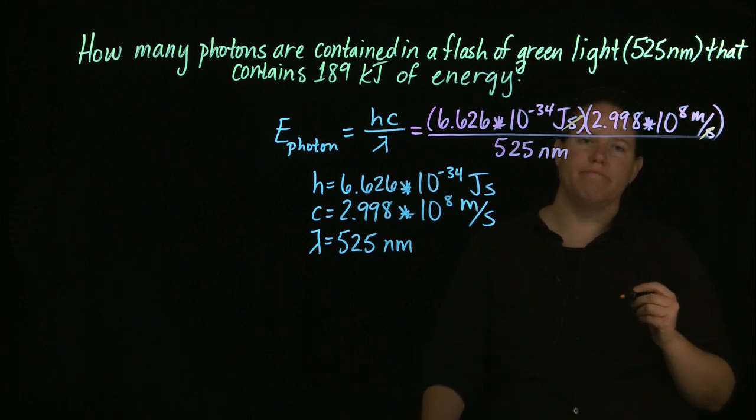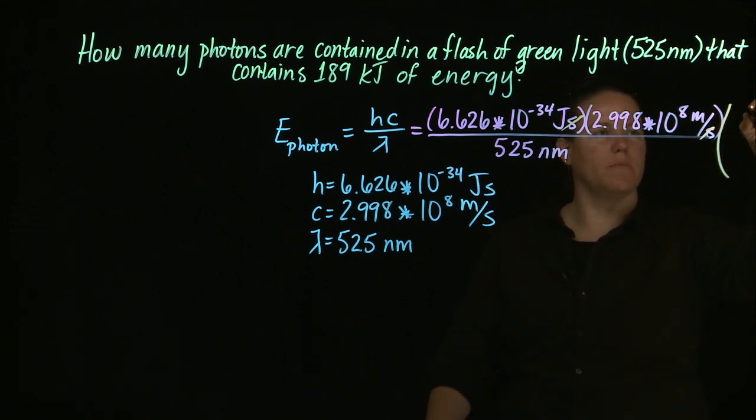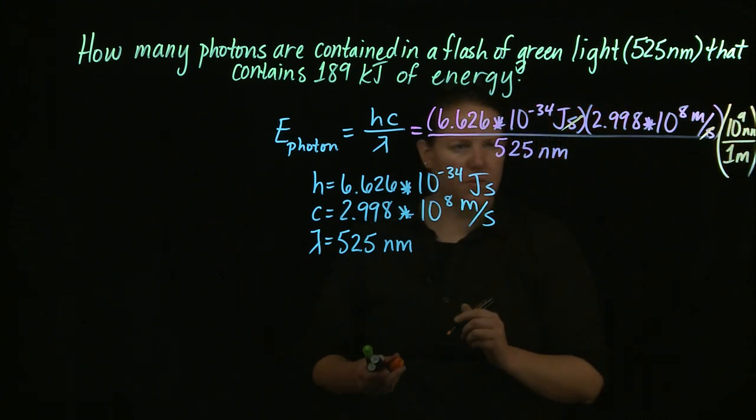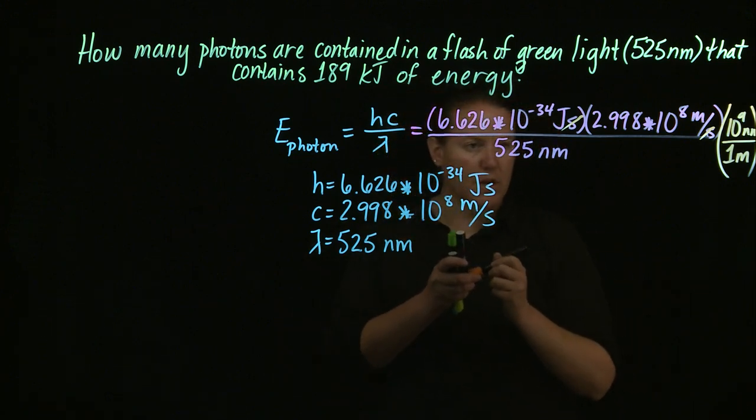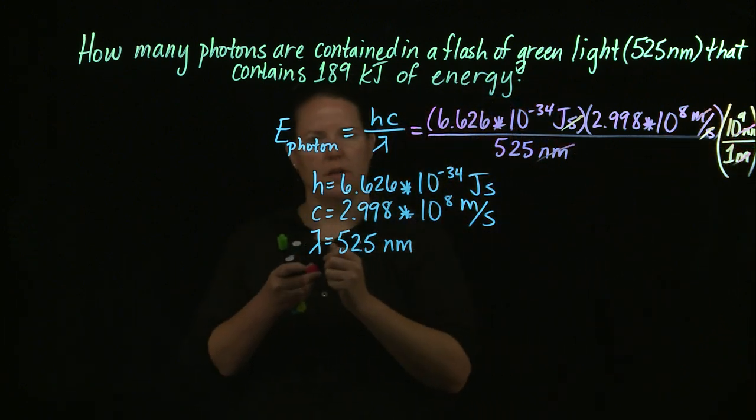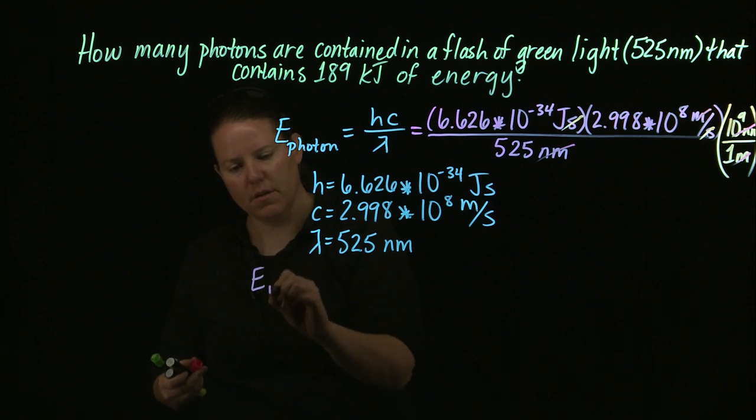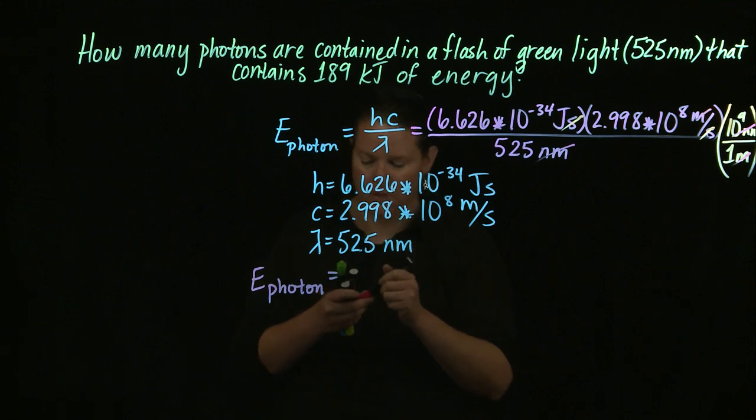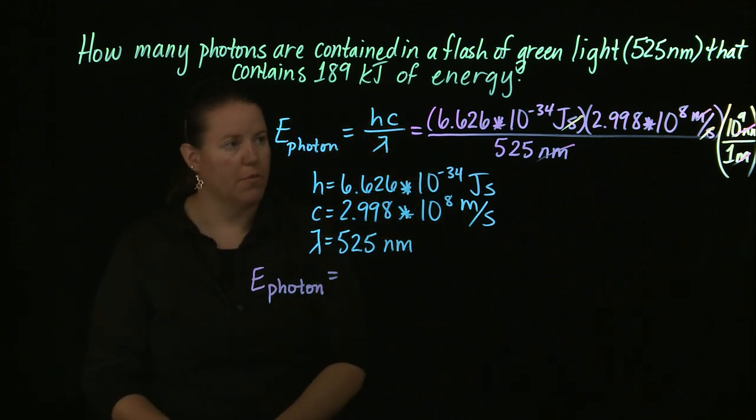Meters and nanometers do not. So I need a conversion factor between meters and nanometers. So how many nanometers are in a meter? Ten to the ninth. There are ten to the ninth nanometers in one meter. I can cancel out now nanometers and meters, and I can get the energy of the photon. So that's the energy of one photon. That's what I'm getting out of Planck's equation.